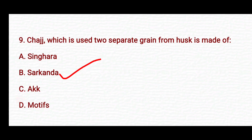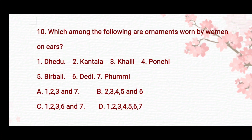The right answer is Option B, Sarkanda. Next: Which among the following are ornaments worn by women on ears? 1. Dedu, 2. Kantala, 3. Khalli, 4. Ponchi, 5. Birbali, 6. Deddi, 7. Fummi. Option A: 1, 2, 3 and 7. Option B: 2, 3, 4, 5 and 6. Option C: 1, 2, 3, 6 and 7. Option D: 1, 2, 3, 4, 5, 6 and 7.